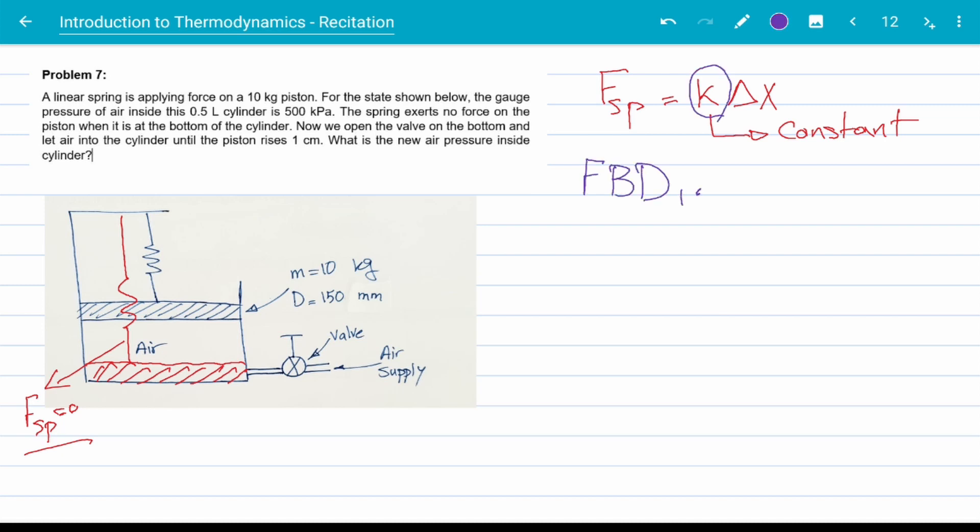Free body diagram of the initial state is drawn here. F of the spring plus the weight of the piston is equal to the gauge pressure of air trapped inside times area.